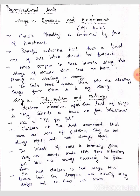Children at this level understand that rules are sort of guidelines — they are not always rigid and not always right. Rules are normally made with good intentions, but it's not always necessary to follow them. Most children in this stage would believe that the druggist was actually being unfair and Mr. Heinz was correct.